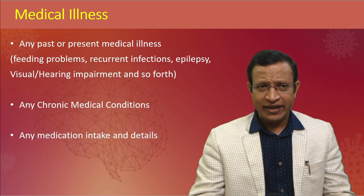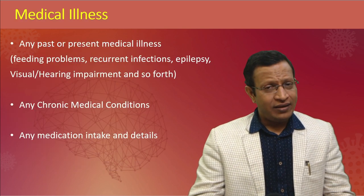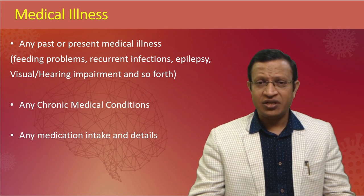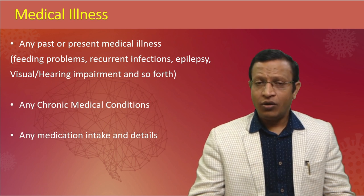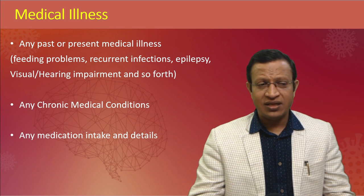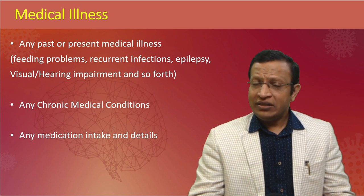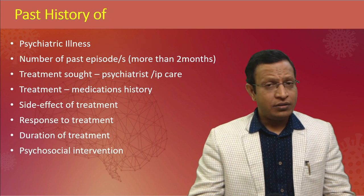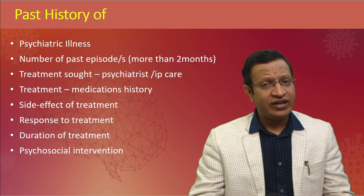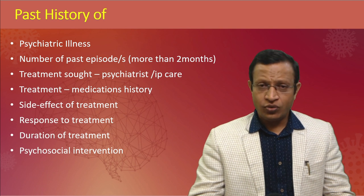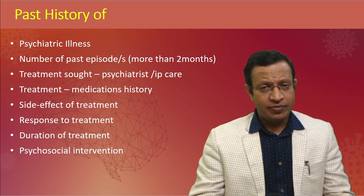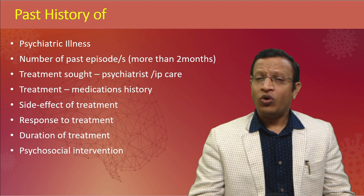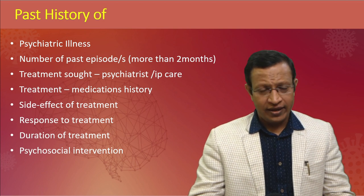For past and medical history: is there any medical illness, chronic medical illness, or recurrent infection, epilepsy, hearing or visual difficulties, or whether the child is on any medication? For past psychiatric history: any episodes in the past, any medication given, response to treatment, side effects, and whether any psychosocial intervention was tried.